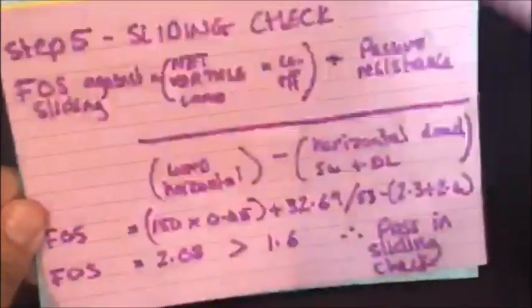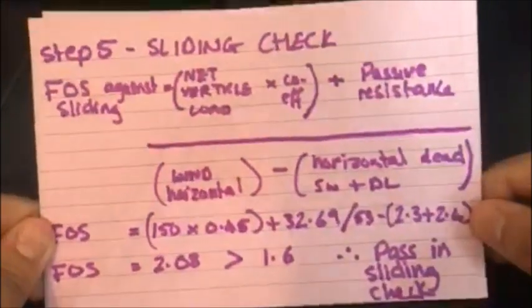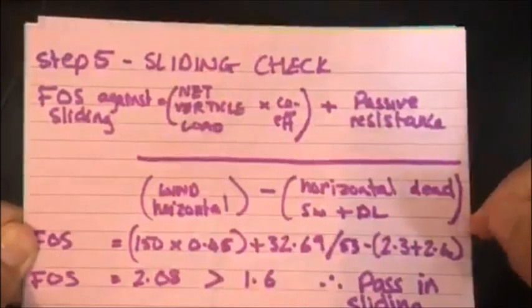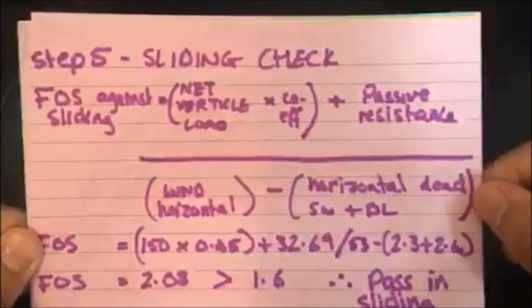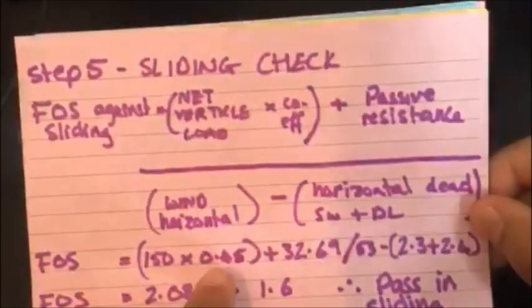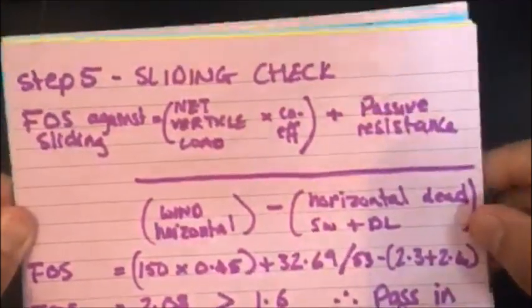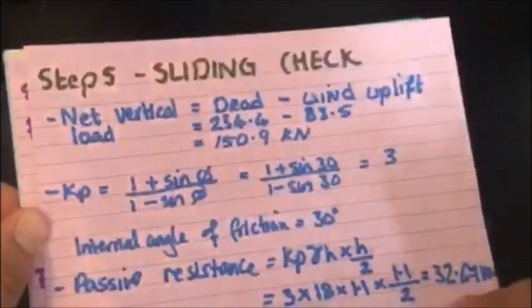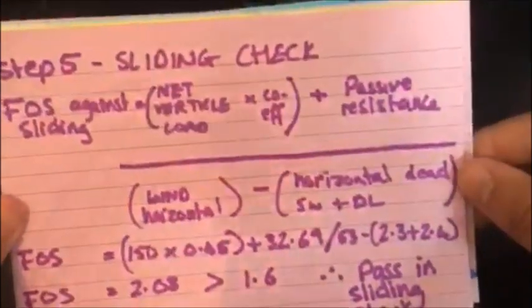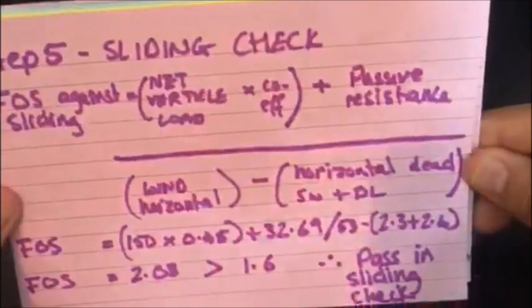So step 5, still on sliding check. So again, for sliding check, you check it against the factor of safety, which is this long formula here. It seems long, but it's not actually that long. So you have your net vertical load, which we just worked out before, times a coefficient value, which is over here. When checking against sliding, the coefficient is 0.45 plus the passive resistance, which is what we just worked out in this step here, which is that value there, 32.67, over the wind horizontal minus the horizontal dead load plus the horizontal self weight load.